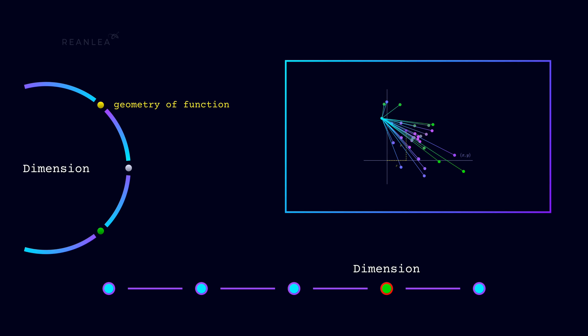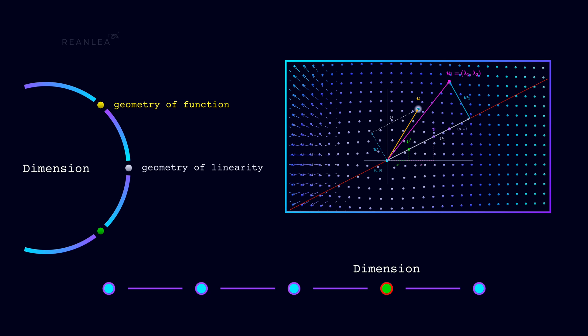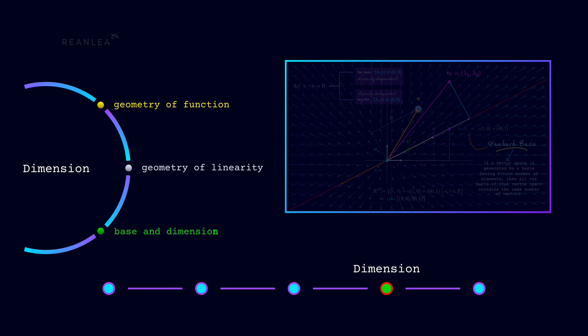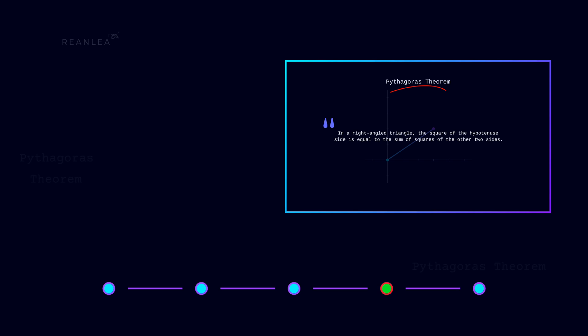Then we'll represent geometrically linear dependent and independentness of vectors, and based on those geometric approaches we'll define bases and dimensions and discuss why dimension of R² is two. Next we'll delve into fundamental concepts to establish a solid foundation for our discussion through Pythagorean theorem.